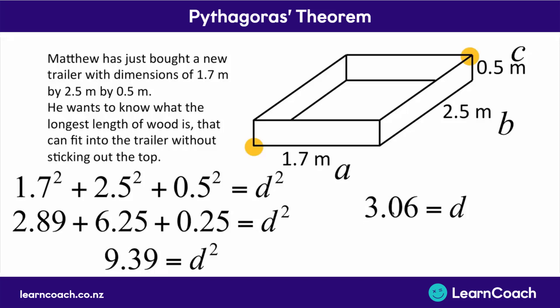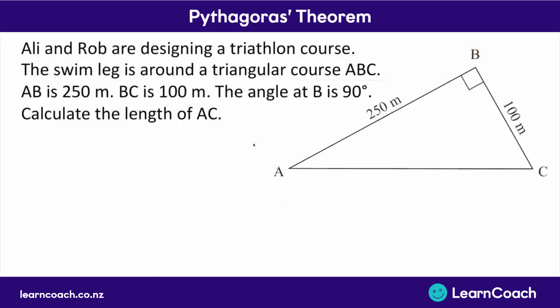Remember, this is a merit or excellence level question, so you're going to need to write a sentence at the end which explains your answer. It's not good enough just to write 3.06 equals d. You need to say: therefore, the longest length of wood would be 3.06 metres long, which he could fit in his trailer. The next question we're going to look at is a 2D Pythagoras question.